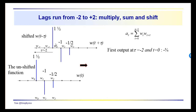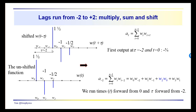The shifted copy is here; this is the unshifted function W. The first output is at tau equal to minus 2, which turns out to be minus 3 quarters. There's only one non-zero multiplication — that's between W2 in the unshifted function with W0 in the shifted function. For example, W0 times W minus 2 and W1 times W minus 1 are zero. So this is the only non-zero product. We're running time forward from 0 and tau forward from minus 2 and carrying out this multiplication.